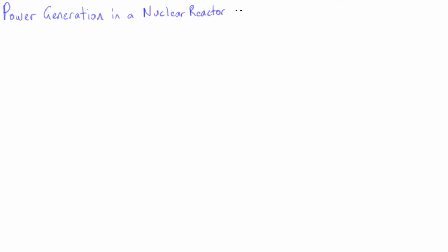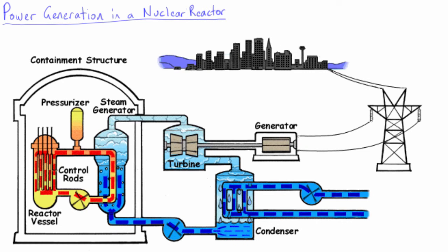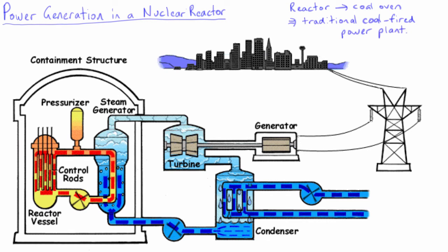When it comes to electricity generation, the only real difference between a coal-fired power plant and a nuclear power plant is in the way that heat is generated. In a fission reactor, the heat liberated by nuclear fission is in the form of kinetic energy of the fission fragments. This energy is used to heat water, create steam, and hence drive a generator to produce electricity. A coal-fired power plant creates heat by burning the coal; however, that heat then drives a steam cycle in almost the same way as a nuclear power plant.